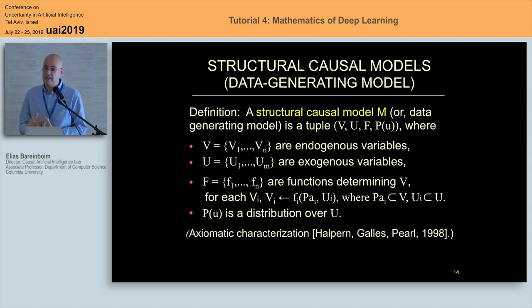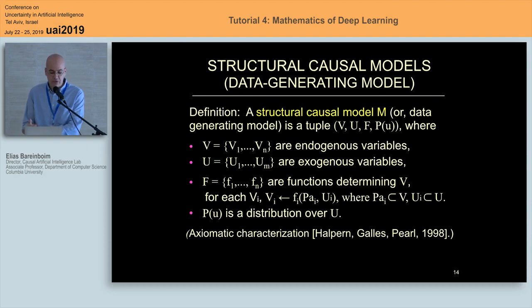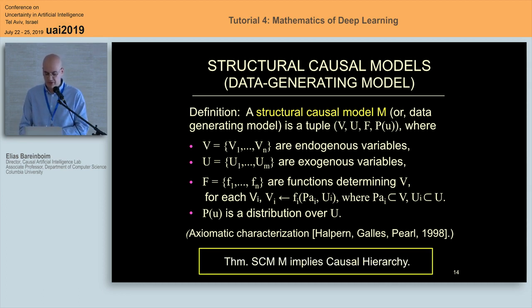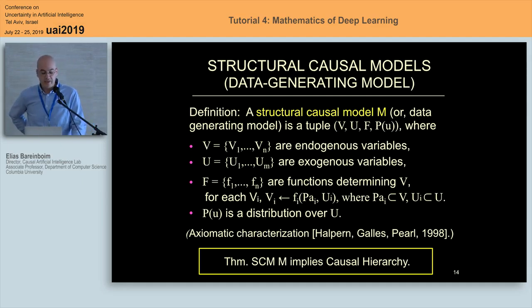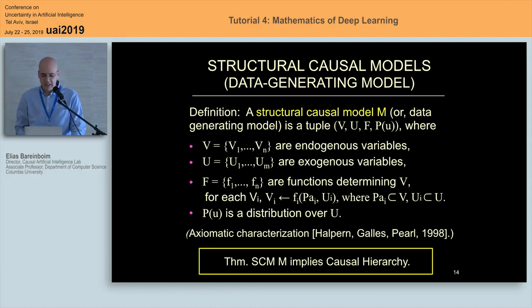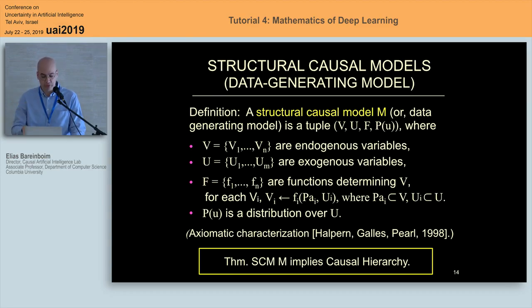This system admits an axiomatic characterization — there is parallel work by Halpern and by Goddard and Pearl giving the axioms of such systems. It's a solid framework. An important theorem says that once you have an SCM, it implies what, if you've read the Book of Why, is called the ladder of causation — what we usually call the causal hierarchy. Once you have a well-specified SCM, it induces a hierarchy of different distributions. Let me show you which distributions play a key role in our understanding of causal reinforcement learning.